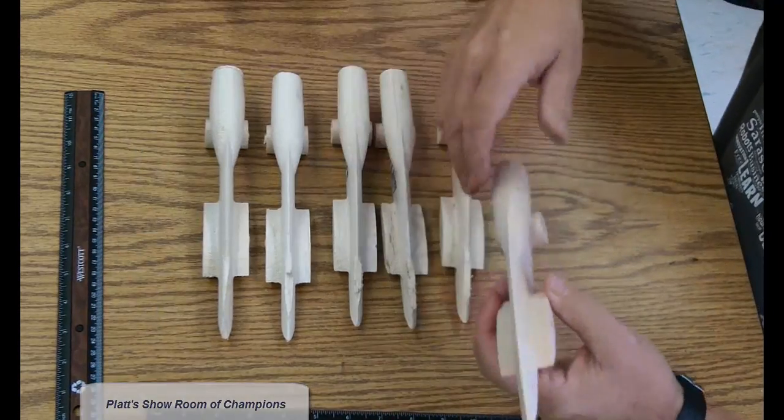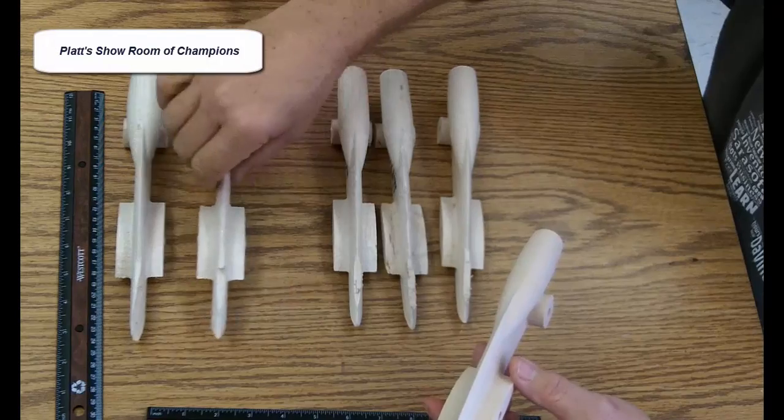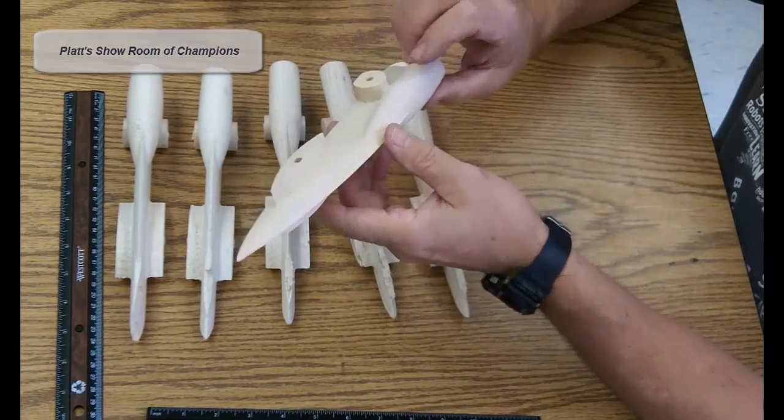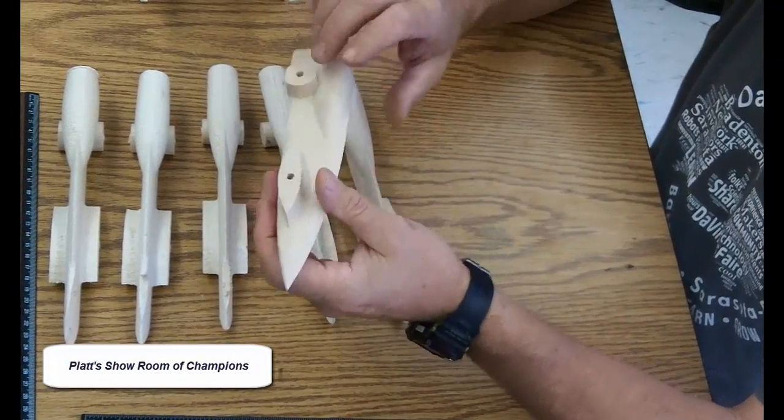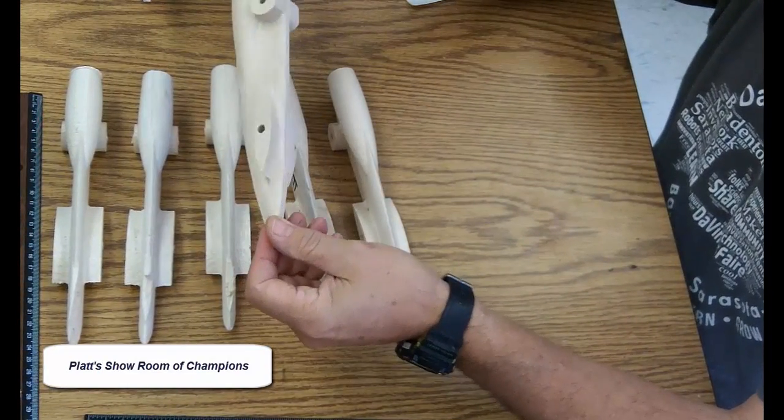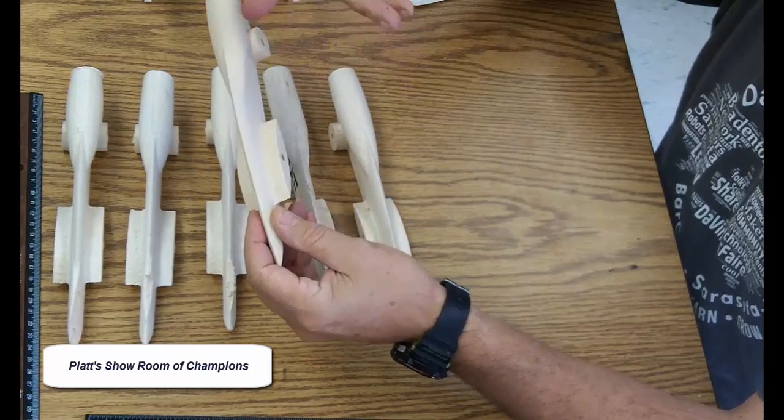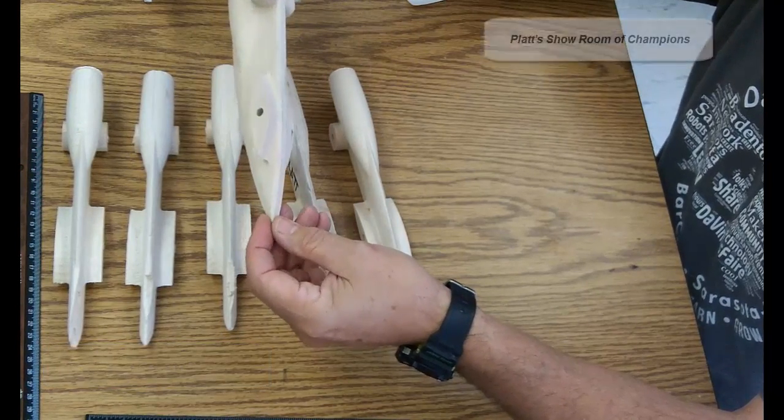But ultimately, where I need the rest of these dragsters to be right now is in this condition right here. This is the pre-state where we got it sanded down as we need it. This is the state where we would then come back and put the wood hardener on it or some kind of sand sealer.